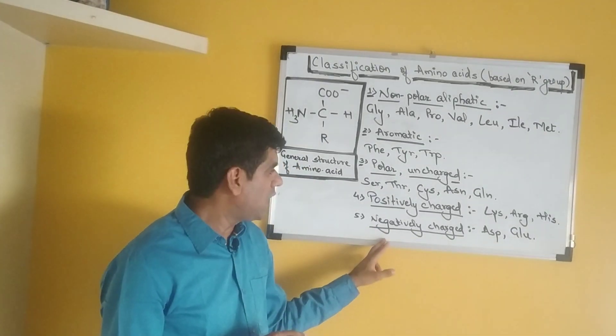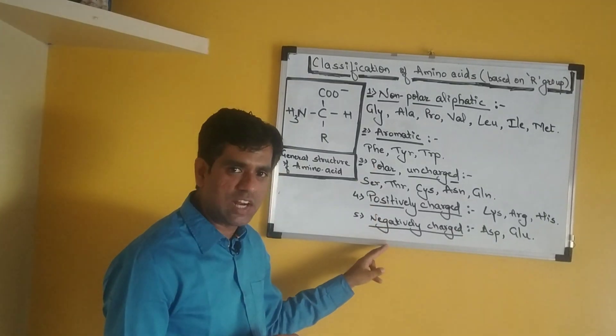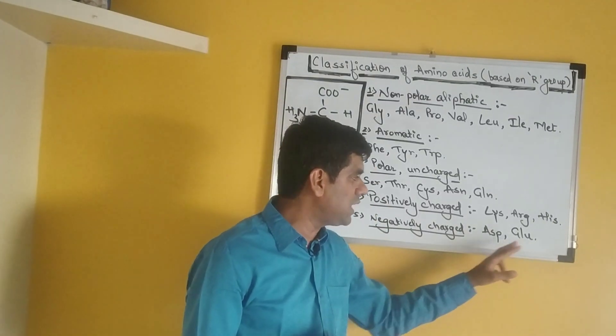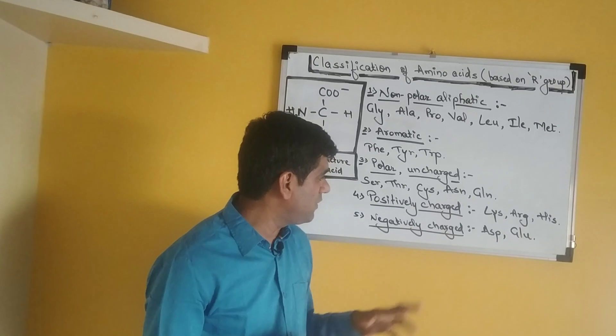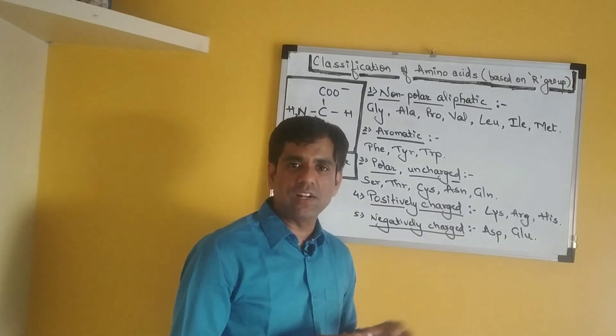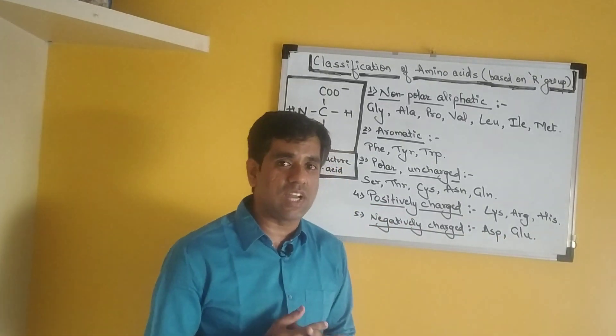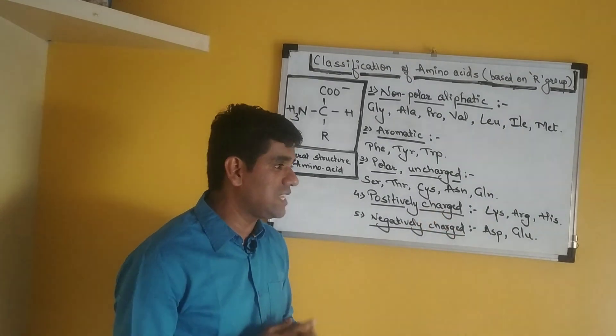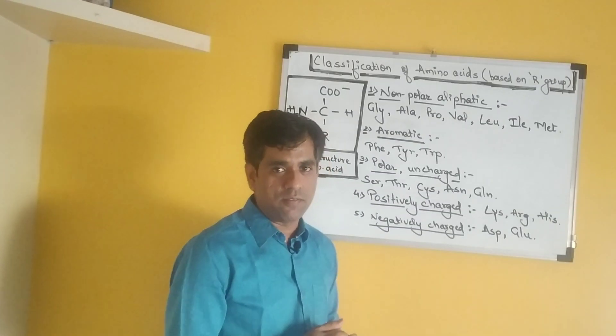We have a negatively charged group—amino acids which have a negatively charged R group. The two in the list are aspartate and glutamate. At pH 7, these two, aspartate and glutamate, have a negative charge. That is because of the second carboxyl group which they have.